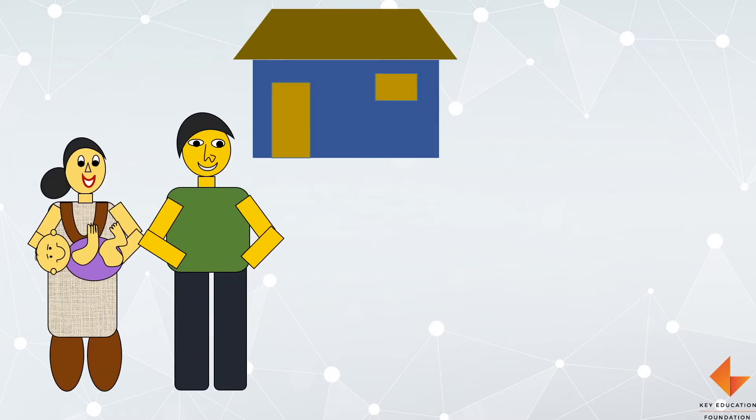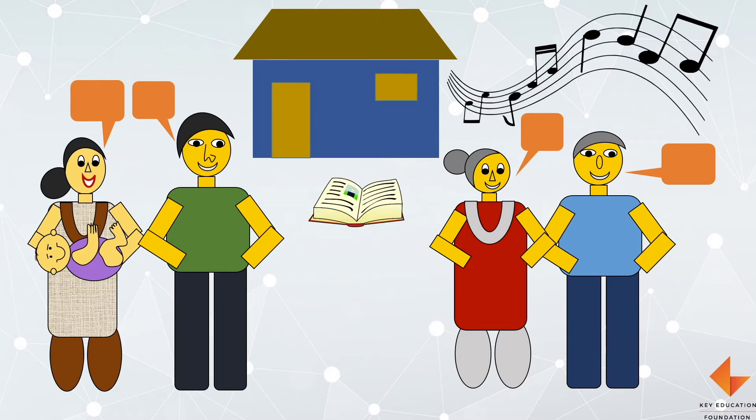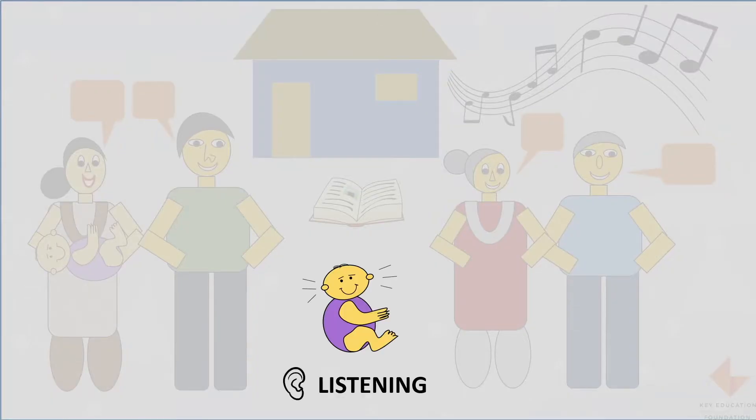When a child is born, even in the early days and weeks, they start to communicate by crying and smiling. They start picking up language by hearing the sounds around them, the things that their family members are talking to them, singing to them, telling them stories. So the first skill that a child develops is listening.